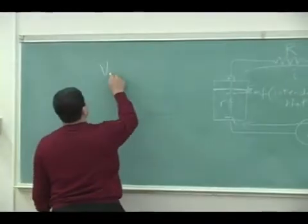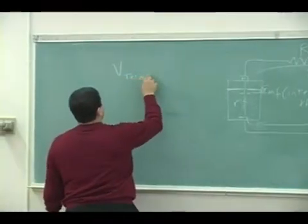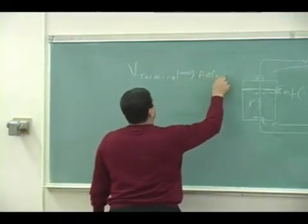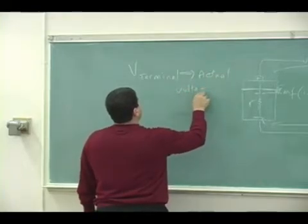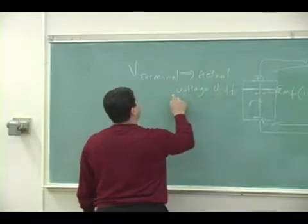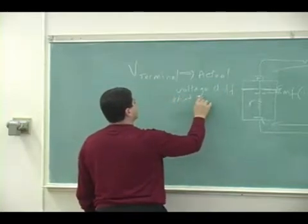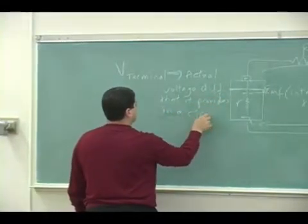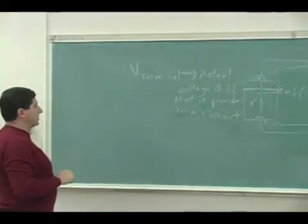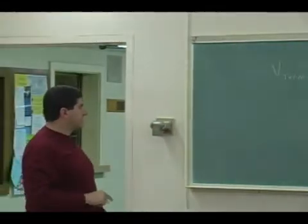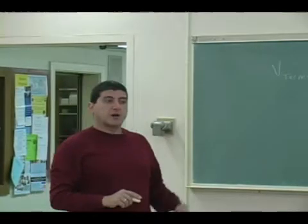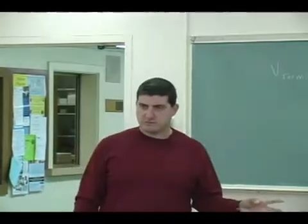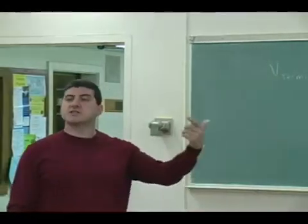V-terminal is the actual voltage difference that it provides in a circuit. Now, if the battery is brand new, perfect, then Vt is equal to EMF. But as it gets used, the V-terminal is less than the EMF.